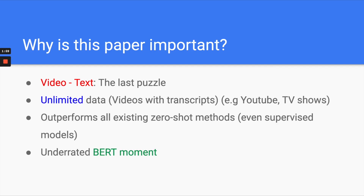Why is this paper important? First of all, video to text — video-text or text-to-video is the last piece, the last puzzle, because we already do a lot with images: text-to-image, images-to-text. But video and text — the data volume is tremendous. Also, why this method is so good is because we almost have unlimited data, meaning video with transcripts. Imagine if you can have YouTube as your dataset. YouTube has so many videos with transcripts. If you can leverage that, you can definitely build a very powerful model. These proposed methods outperform all existing zero-shot learning methods and even outperform supervised learning models. In my opinion, it's a very underrated paper and it's a BERT moment for video-text understanding.